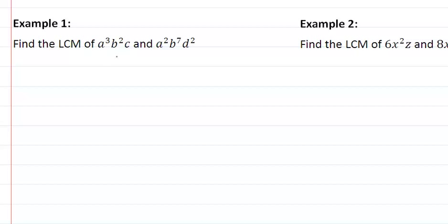In our first example, we are going to use all the unique factors, so our unique factors are a, b, and c. Our highest exponent for a is 3, our highest exponent for b is 7, our highest exponent for c is 1.